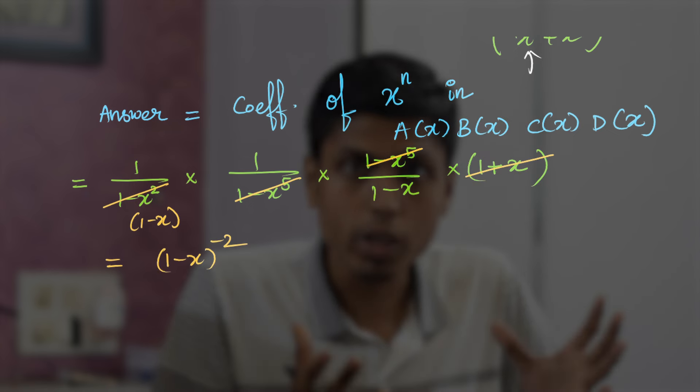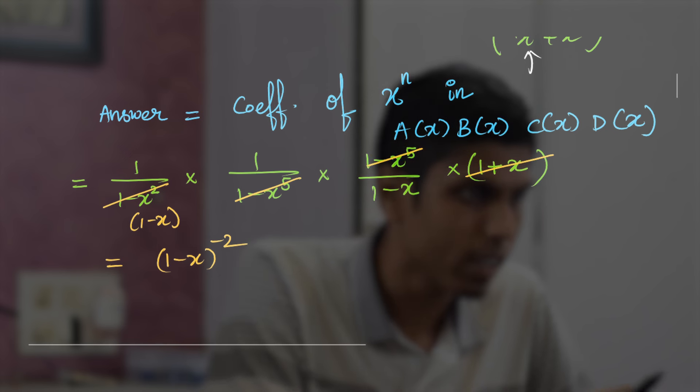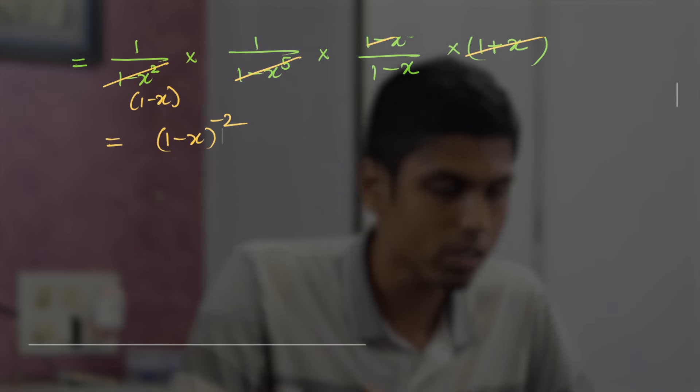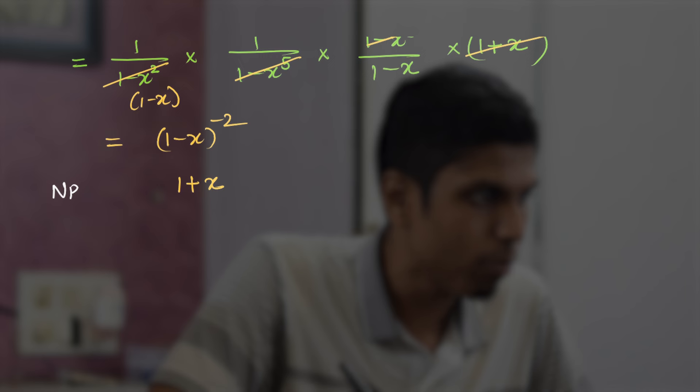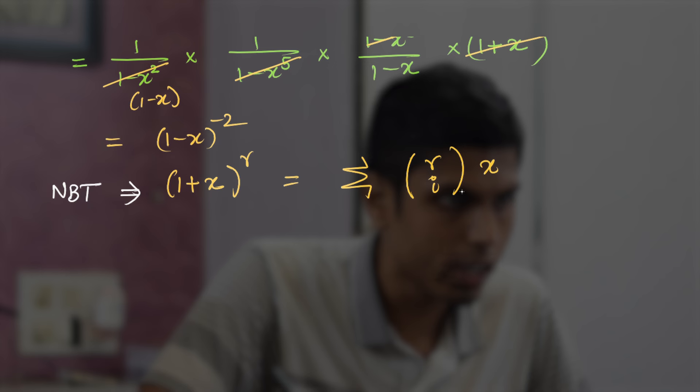So this is very simple, right? And we have Newton's binomial theorem to handle this. Why don't we use that? What is Newton's binomial theorem? Newton's binomial theorem implies that (1 + x)^r equals the summation of (r choose i) · x^i, where i goes from 0 to infinity.